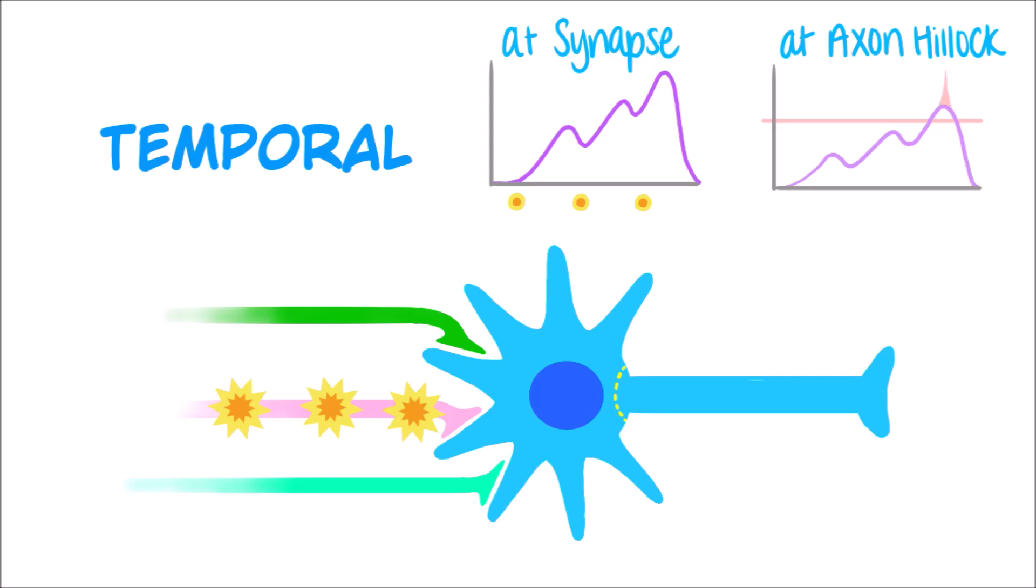You can see how the amplitude on this axon hillock graph is smaller than that on the synapse graph. This is because of the loss of voltage as the EPSPs travel across the cell body.